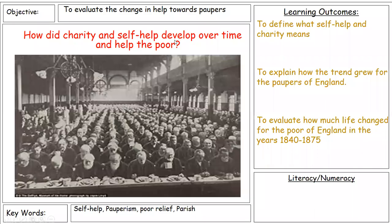This lesson follows on from the Andover Scandal lesson and focuses on how the development of charity and self-help occurred over time. The Andover Scandal was a big turning point in attitudes towards the poor in England. After the Amendment Act of 1834, the treatment of the poor didn't get any better — if anything, it became more limited because of the impact of the workhouses.